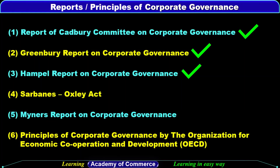So let's begin with the reports of corporate governance. There are different committees and recommendations on corporate governance in the international context. In the earlier videos, we have discussed the Cadbury Committee Report, Greenbury Committee Report, and Hampel Committee Report on Corporate Governance. If you are new to the channel and haven't seen those earlier videos, I will provide the link in the description box — you can watch them by clicking on that link.